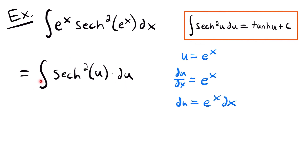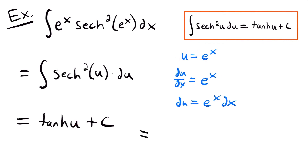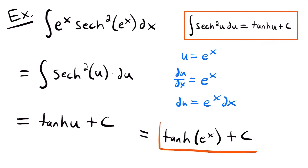We now have an integral matching our integration rule. Integrating gives hyperbolic tangent of u plus c. Replacing u with e to the power of x, the final solution is hyperbolic tangent of e to the power of x, plus c.